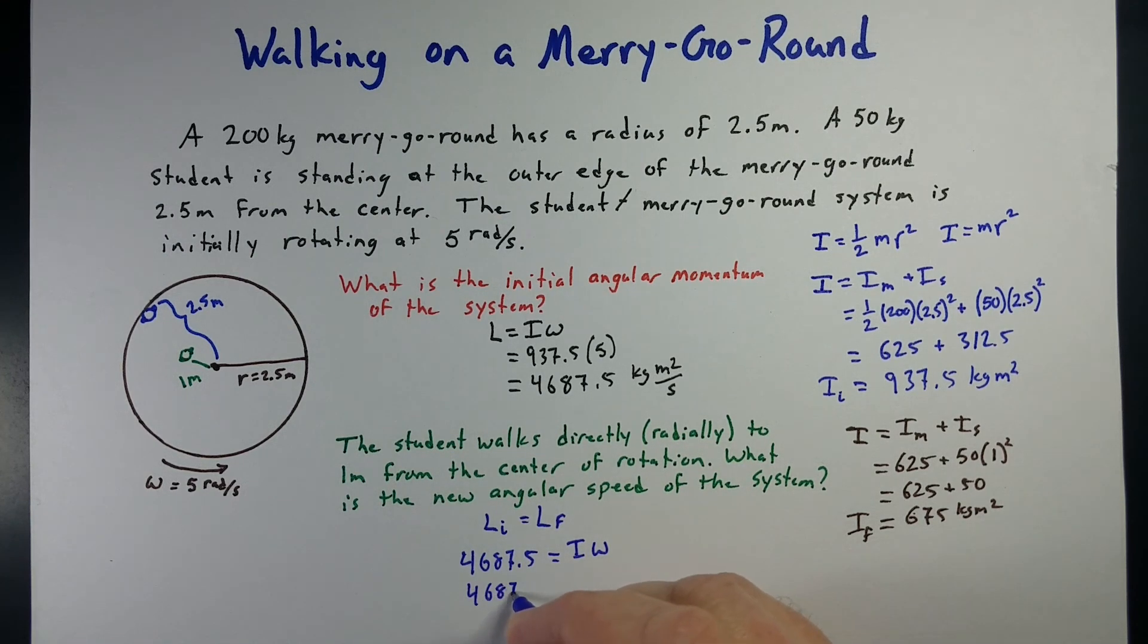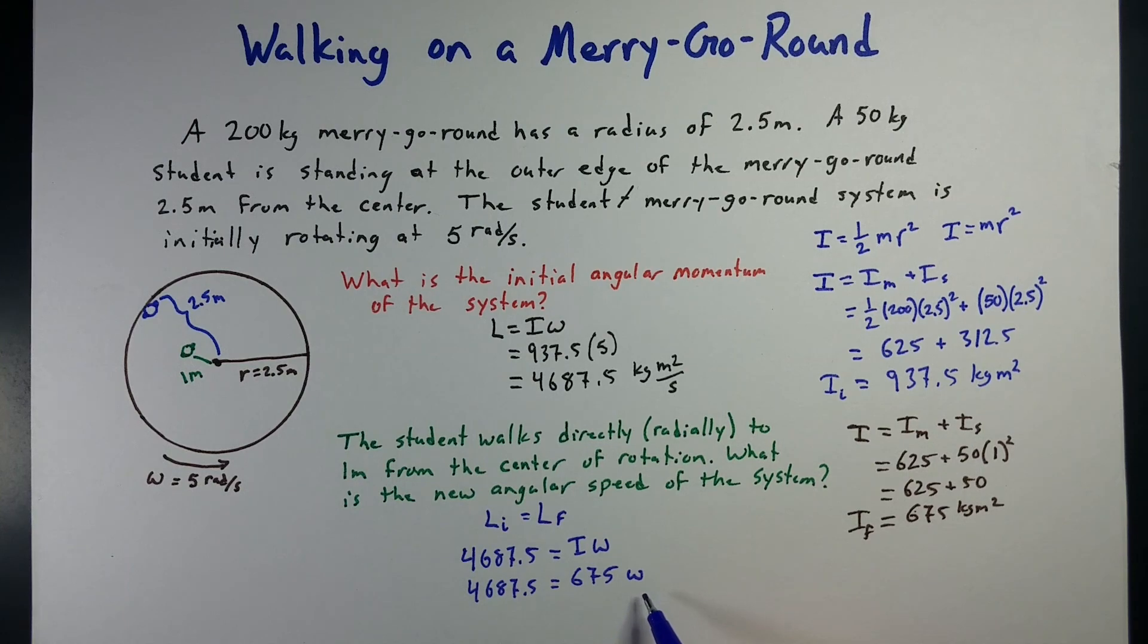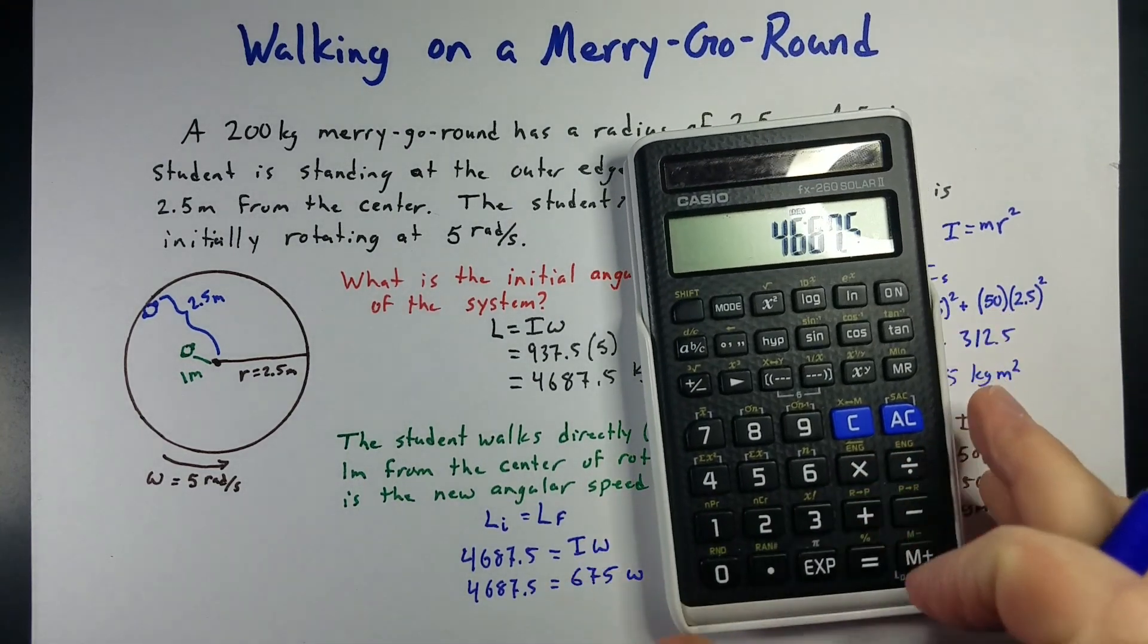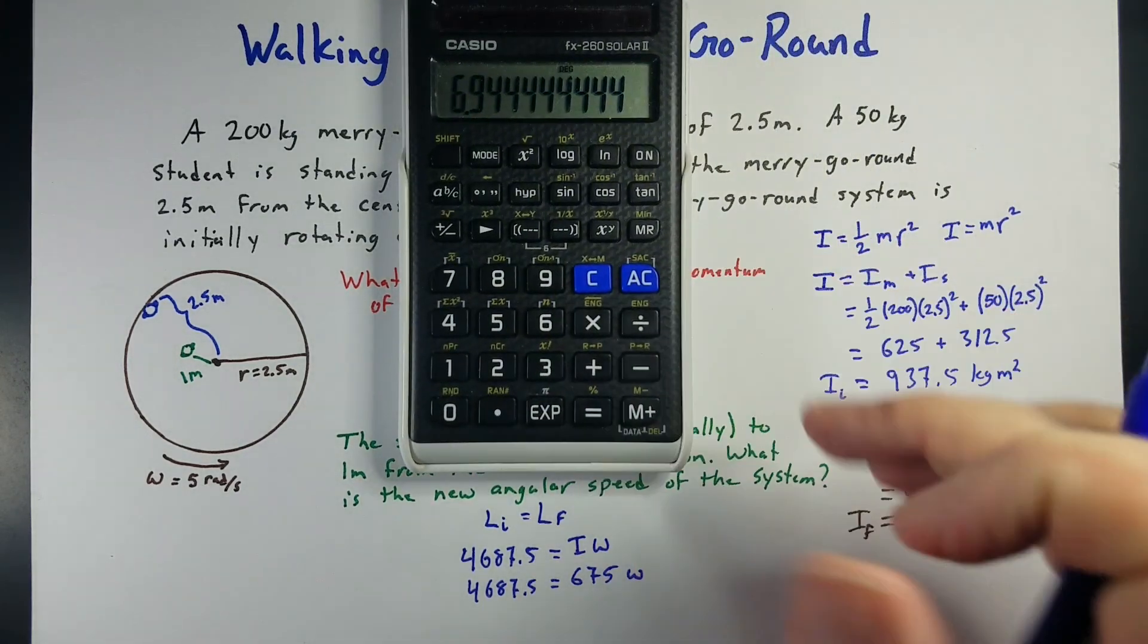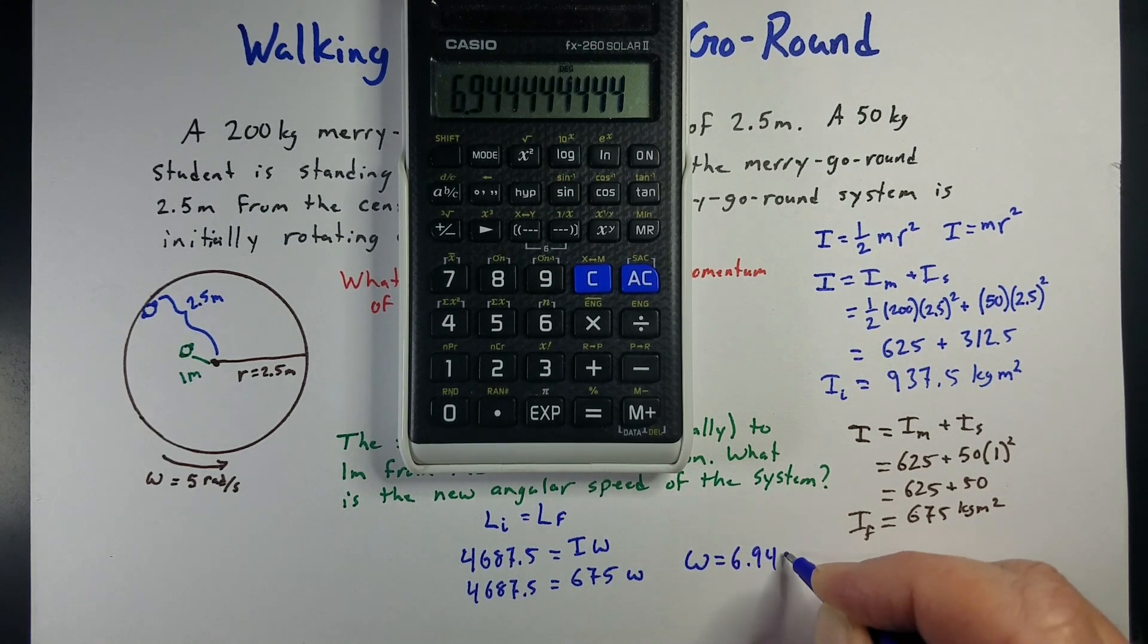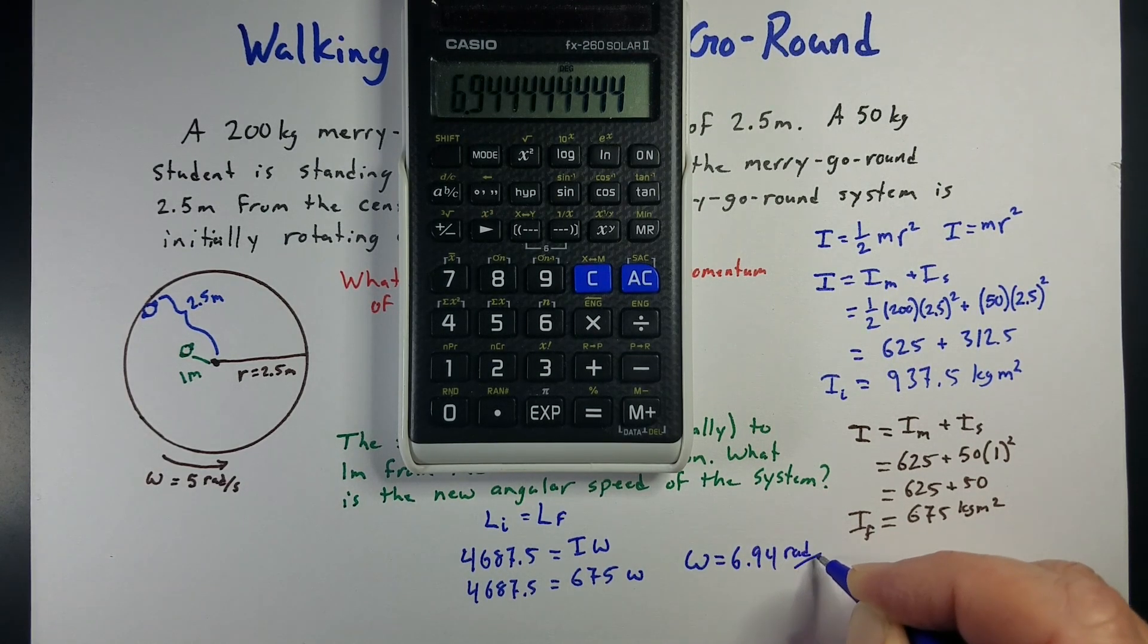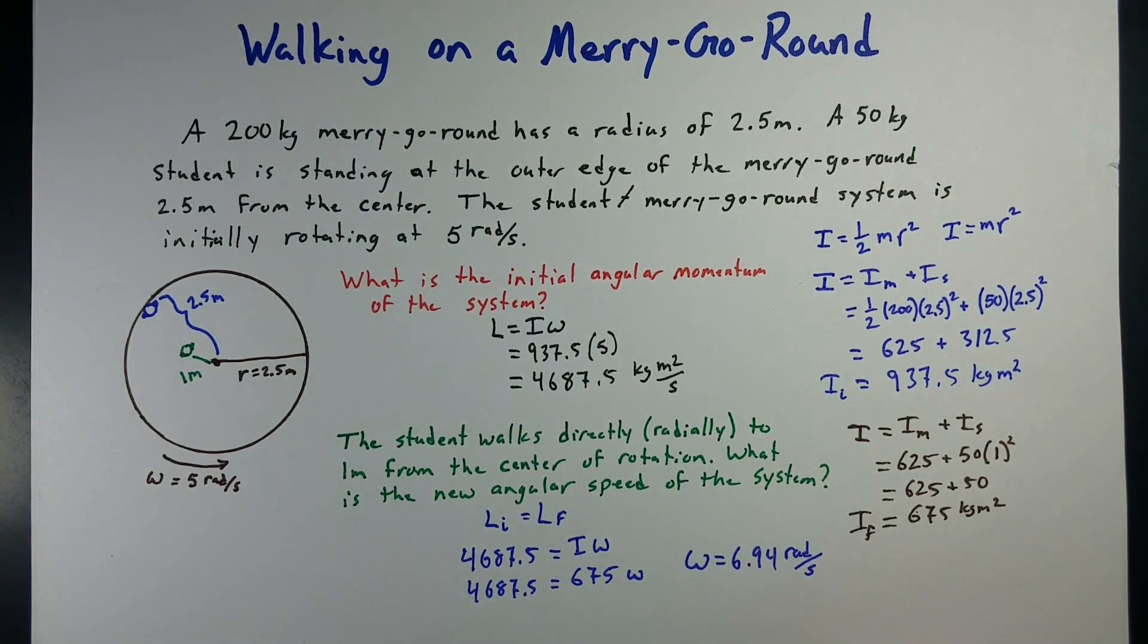So, we're just going to divide that by the 675, and we get our new angular speed to be 6.94 radians. See, I told you it'll come back per second. So, it almost speeds up two radians per second for that student moving in towards the center.